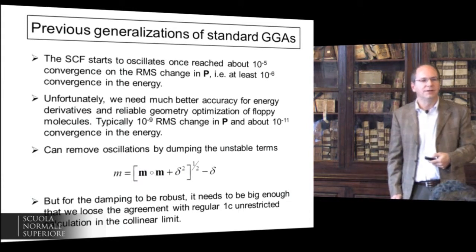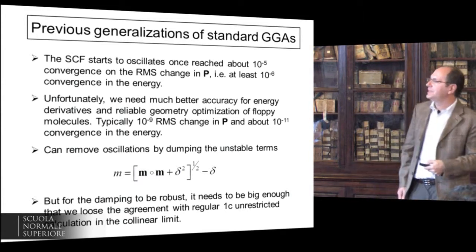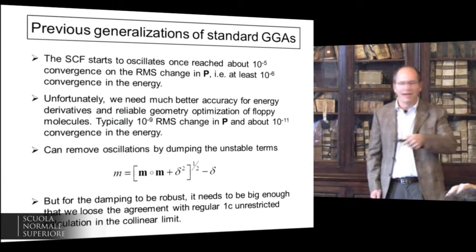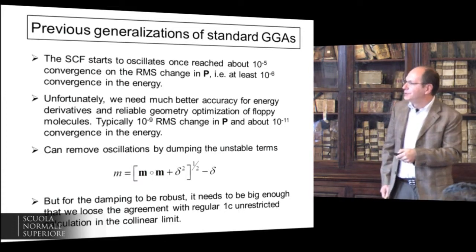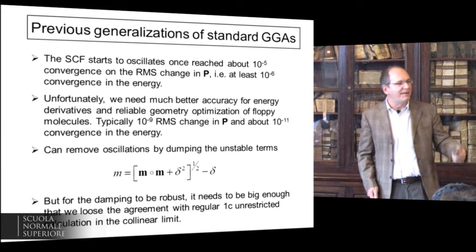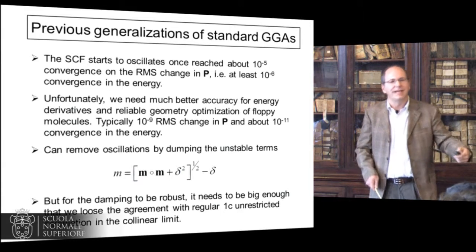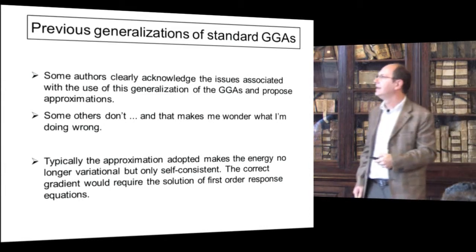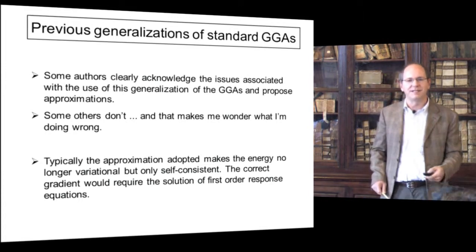You simply wobble around because you are selecting random components of the magnetization gradient every time — a different one. The SCF becomes hopelessly confused. This is unacceptable for us because we need 10⁻⁹ accuracy on the density. You can damp this oscillation by defining the magnetization with a damping factor, which is zero when M is zero so that the derivative doesn't blow up. But to be robust in every case, the damping has to be big enough that you don't recover the unrestricted one-component result — so your formalism doesn't reduce to the collinear limit correctly.